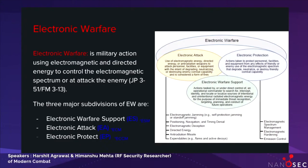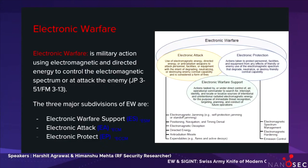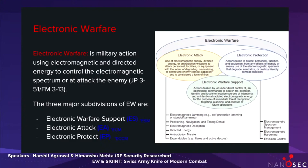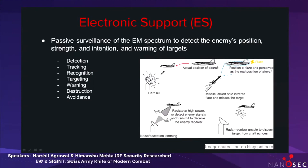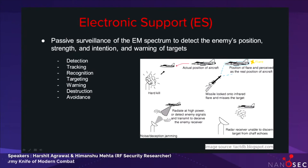In current generation terminology, electronic support is also called Electronic Warfare Support or Electronic Support Measures. Electronic attack is also called Electronic Counter Measures, and electronic protection is called Electronic Counter Counter Measures. When we talk about electronic support, its main function is to detect, intercept, identify, locate, or localize sources of unintended or intended radiated electromagnetic energy.